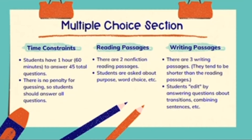Students often ask if the AP Lang multiple choice questions are similar to those on the ACT or SAT, since many students take those tests during high school as well. There are some similarities; however, the AP Lang questions are usually a little bit harder. Part of that is because there are five answer choices and not four, but also the reading passages are a little more dense than what you'd see on the SAT or ACT. So there is some overlapping skill, but they are separate tests.